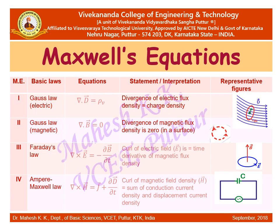Let us look into the summary table. Looking at Maxwell's equation 3 and Maxwell's equation 4 — in Faraday's law, the third Maxwell's equation, the curl of E, that is the electric field, is going to give the rate of change in the magnetic field. And in the case of Ampere's law, the curl of H, that is the magnetic field, is going to have an effect on the electric field.